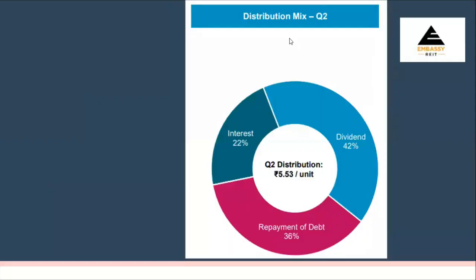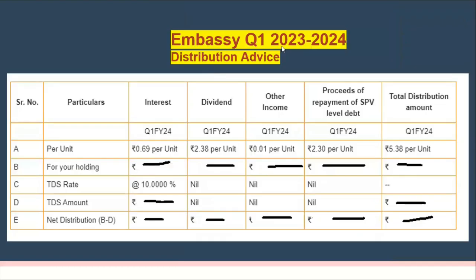That's what we'll discover and explore in this video. If you see here, the Embassy REIT distribution mix for Q2 has been Rs.5.53, divided into interest, dividend, and repayment of debt. The Embassy REIT Q1 distribution advice shows the same thing — Rs.5.38 is divided into major parts of repayment of SPV-level debt and dividend, and not simply dividend.